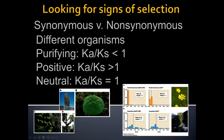Under purifying selection, if you have lots of synonymous mutations that don't change the protein, but non-synonymous mutations are being removed, then the proteins themselves will not change — their function remains basically identical. Genes under purifying selection are very important and critical for survival. They're highly conserved in function. For instance, if I compared a gene in a scorpion and a gene in a spider under strong purifying selection, I could safely predict those genes are doing pretty much the same thing in both species.